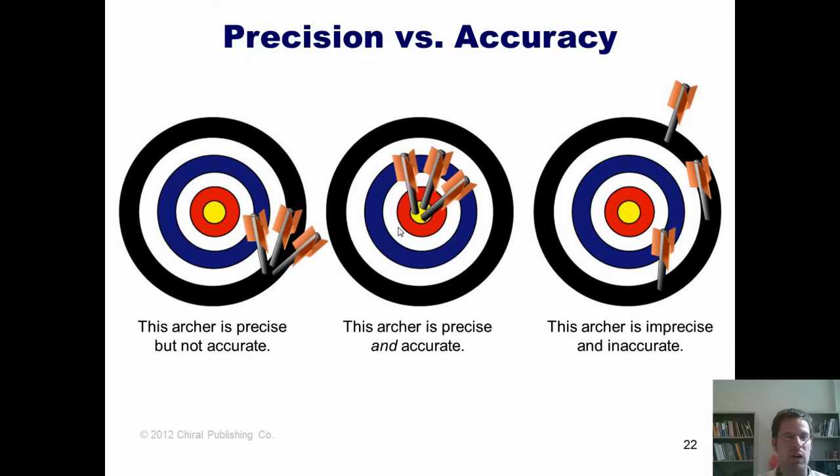I can have various measurements that are very, very precise—that is, they're very, very close to each other—but they might be very, very inaccurate if I'm using a poor scale that's about, I don't know, 90% off of what the actual weight of something is. In contrast, I can also have a situation in which my scale does measure something a lot more close to being its accurate weight, but my different measurements may be very different from each other, so my measurement would be imprecise. I hope that's clear enough, the difference between precision and accuracy.